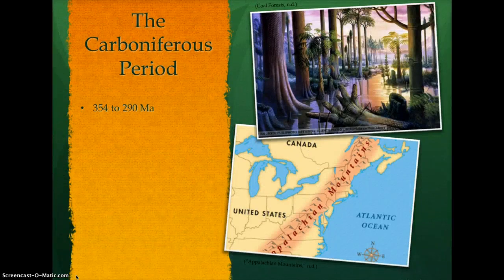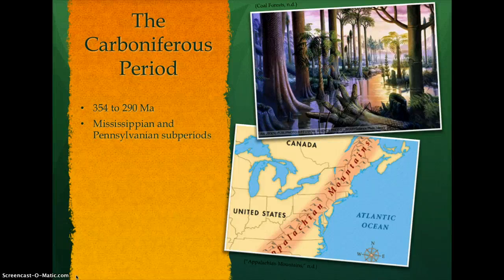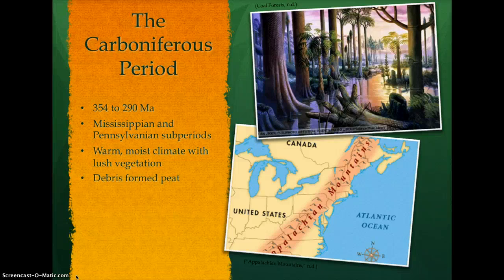Starting around 354 million years ago, the Carboniferous period, including both the Mississippian and the Pennsylvanian subperiods, was known for its lush vegetation, forests, and swamps. During the Mississippian subperiod, La Russia remained in a tropical climate where trees, mosses, and various plants formed organic debris called peat, creating the world's first coal deposits, while Gondwanaland began another poleward migration.